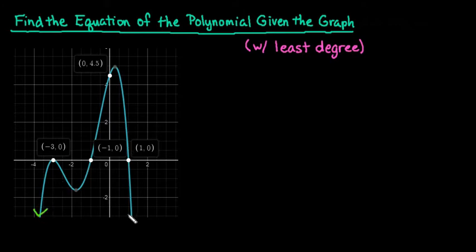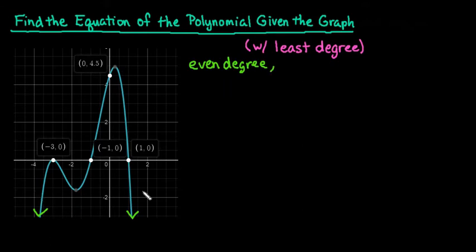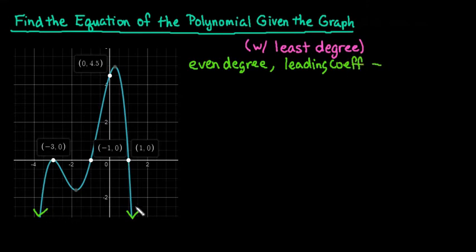First, both of our endpoints are pointing downward, which tells us we have an even degree polynomial — so it could be degree 2, degree 4, degree 6, etc. We also know that since both ends point downward, the leading coefficient is going to be negative because the graph opens downward. So when I find my 'a' term, it is going to be negative.